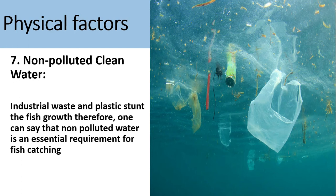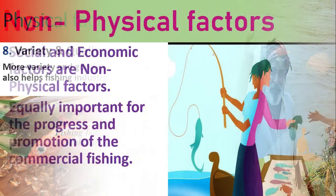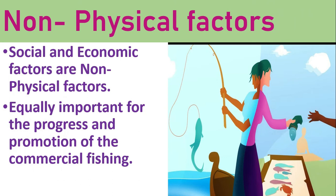The last physical factor affecting the fishing industry is the availability of variety and quantity of fish at the catching ground. Now let's discuss non-physical factors. Social and economic factors are non-physical factors, and they are equally important for the progress and promotion of commercial fishing.